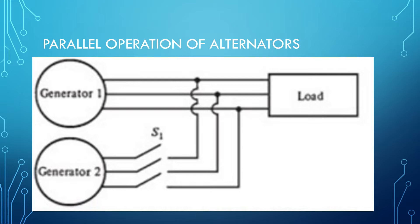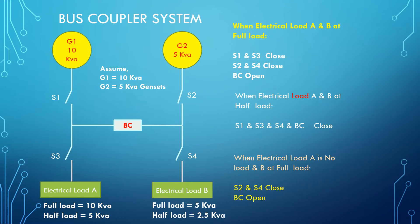We will discuss the parallel operation of an alternator. There are two generators — Generator 1 and Generator 2. Generator 1 already has a load connected. When the load increases, another generator, Generator 2, is brought in through synchronization to run in parallel and share the load. This is the basic idea.